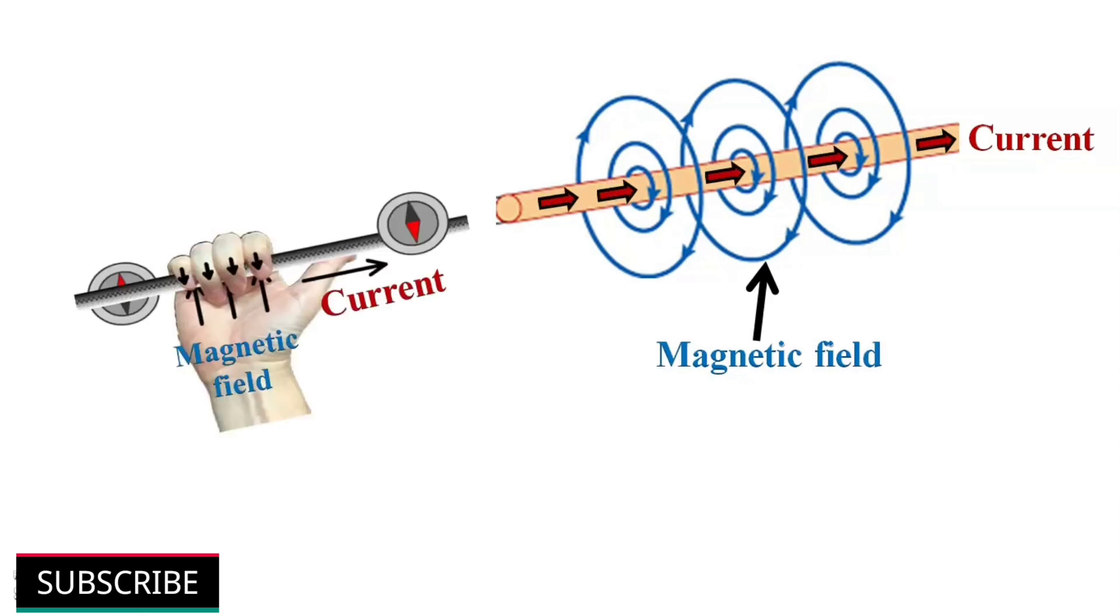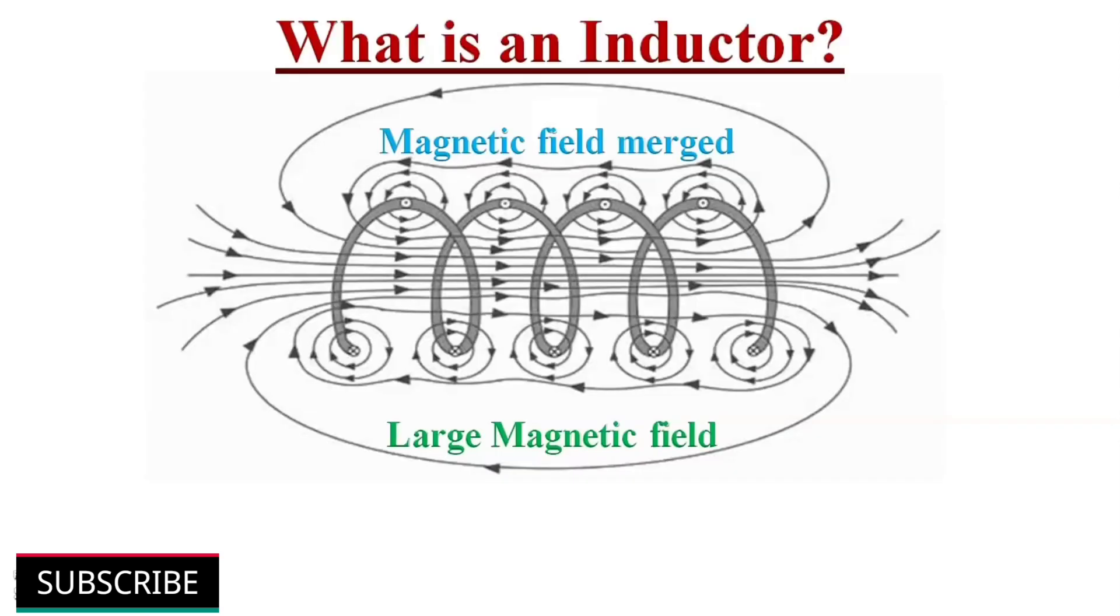The direction of the magnetic field is found using the right hand grip rule. When current flows through a coil, each wire produces a magnetic field, but they will merge together and form a large and more powerful magnetic field.